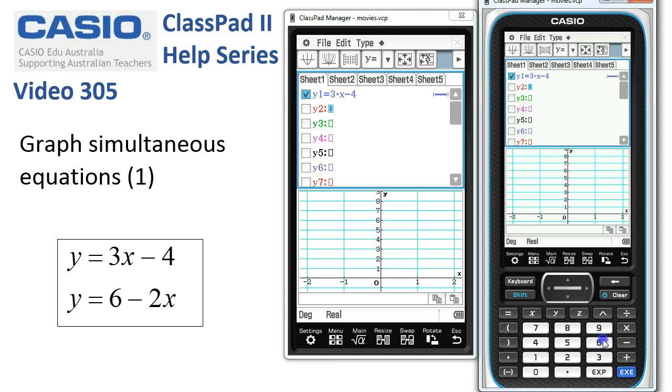And again, 6 minus 2x for the second equation and tap execute so that both equations have a tick beside them here.